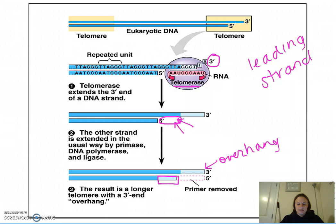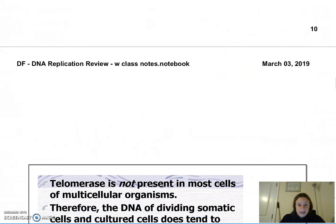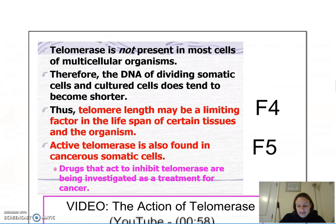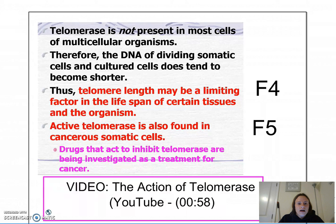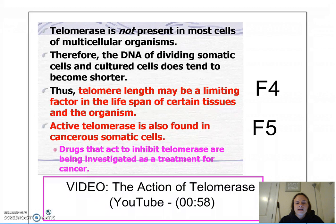Why can't we just inject ourselves with telomerase to keep lengthening our telomeres? As telomeres shorten, that is how we age — telomere length may be a limiting factor in the lifespan of certain tissues and the organism. Unfortunately, I can't just inject myself with telomerase because it is also found in cancerous somatic cells. However, what we are able to do is investigate drugs that could potentially act as inhibitors to telomerase as a treatment for cancer.